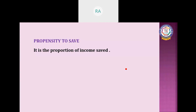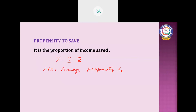Propensity to save is the proportion of income saved. Our income Y is either used for consumption or for savings. There are two measures of propensity to save: one is APS — average propensity to save — and the other is MPS — marginal propensity to save.